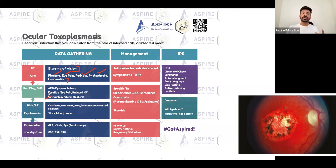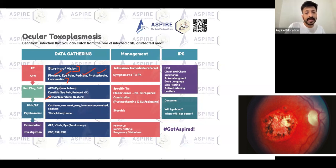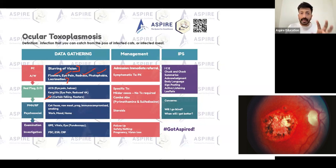Ocular toxoplasmosis can be very severe or it can be mild. Mild cases don't present with much problem, but severe cases can cause pain as well. So keratitis, scleritis, and angle-closure glaucoma are your differentials. Elaborate the presenting complaint with open questions and ask about other symptoms and red flags.